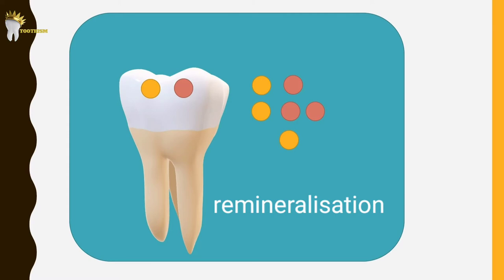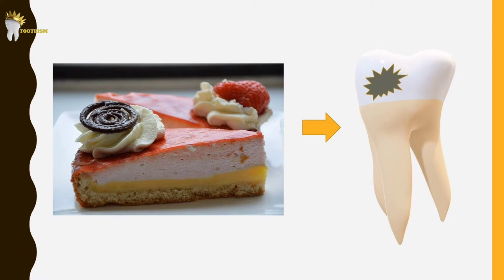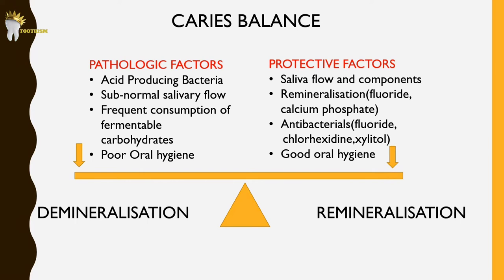Remineralization is possible because saliva is supersaturated with calcium and phosphate ions, which are like raw materials for the remineralization process. But repeated intake of fermentable carbohydrates causes the low pH to be maintained for longer periods, not allowing remineralization to take place. That's why we see the association of dental caries with sugary diet. Understanding the balance between demineralization and remineralization is important for caries management. Individuals where the balance tilts toward protective factors — like good salivary flow, calcium and phosphate remineralization, or use of antibacterial mouthwashes like chlorhexidine — are much less likely to develop dental caries.